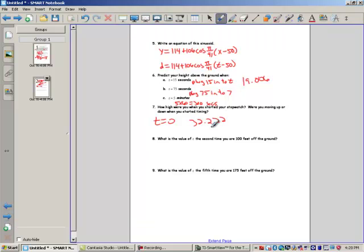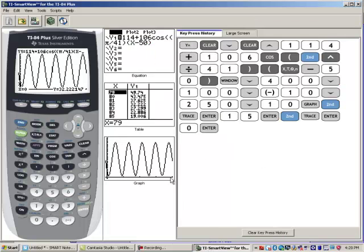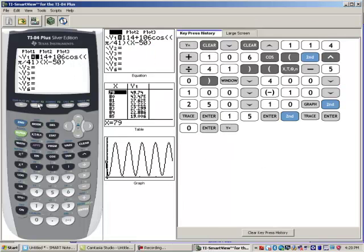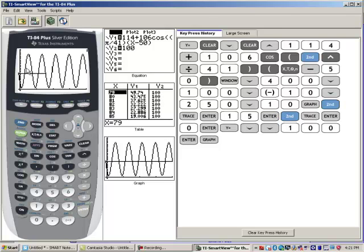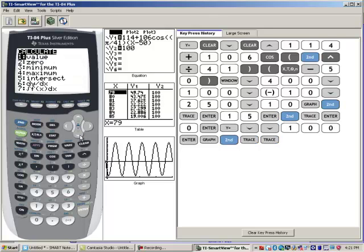What is the value of t the second time you are 100 feet off the ground? So we go back to our picture. And let's go to y equals and type in a second equation of 100. So we want to know, here's the first time we were at 100. We want to know the second time we were at 100. So I'm going to calculate an intersection.